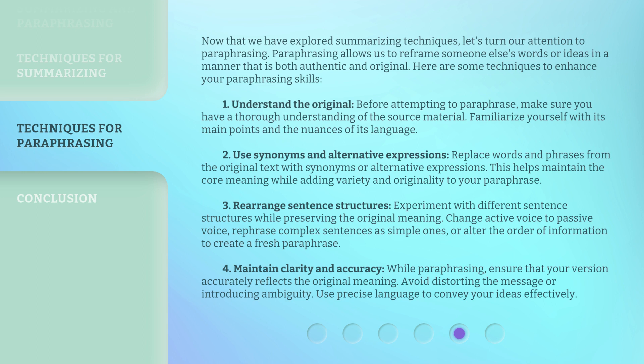Technique 3: Rearrange sentence structures. Experiment with different sentence structures while preserving the original meaning. Change active voice to passive voice, rephrase complex sentences as simple ones, or alter the order of information to create a fresh paraphrase. Technique 4: Maintain clarity and accuracy. While paraphrasing, ensure that your version accurately reflects the original meaning. Avoid distorting the message or introducing ambiguity. Use precise language to convey your ideas effectively.